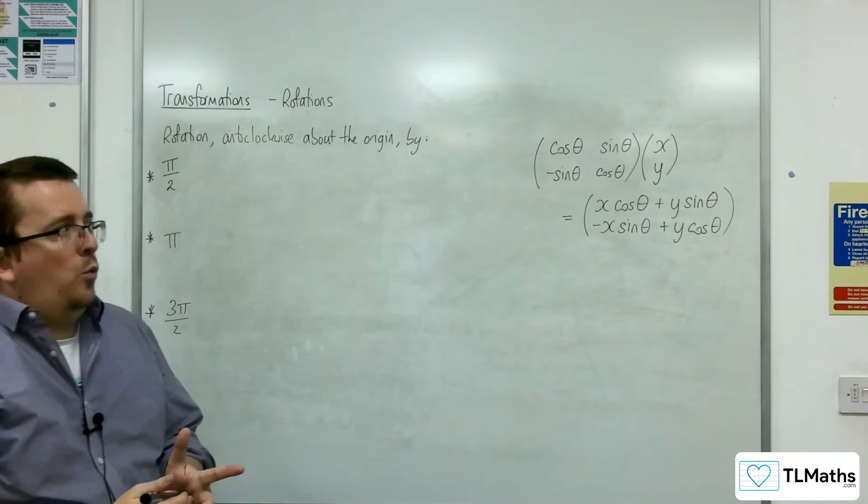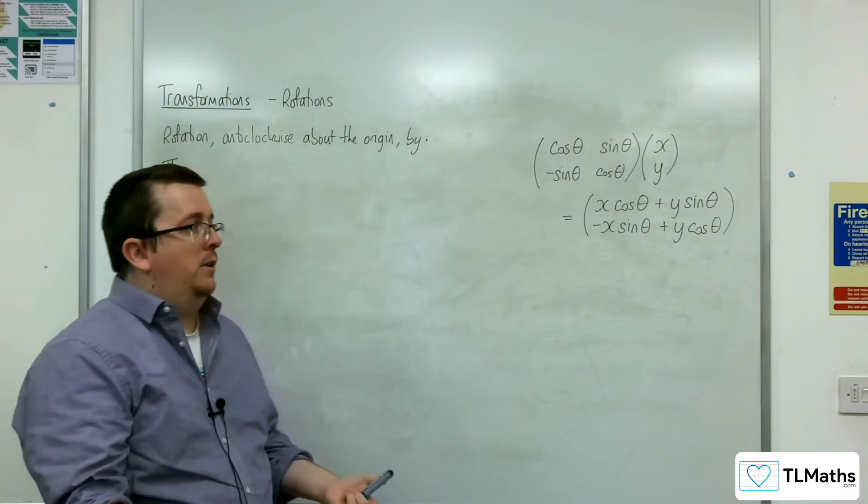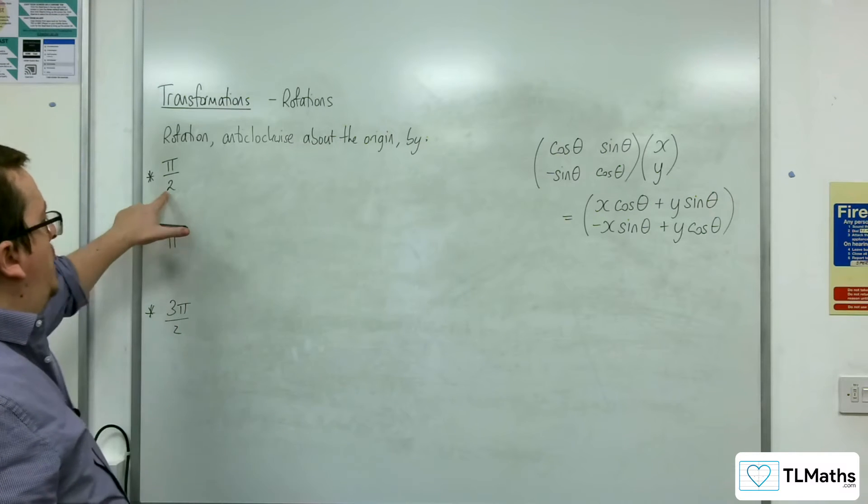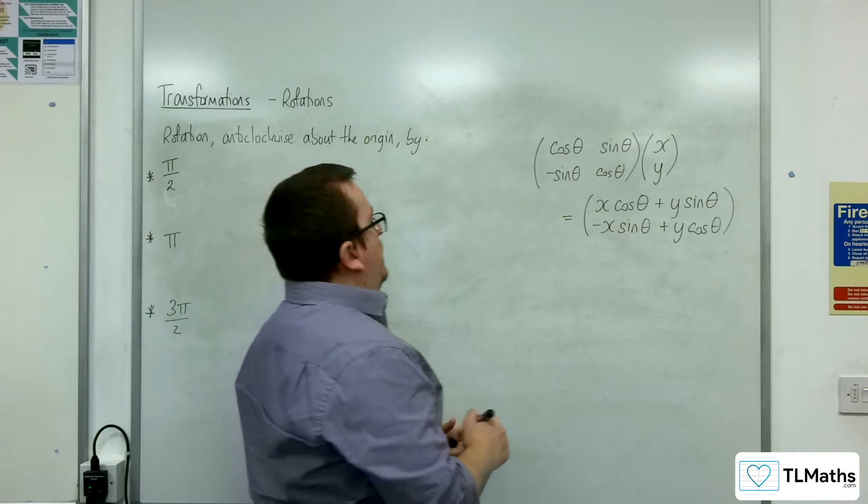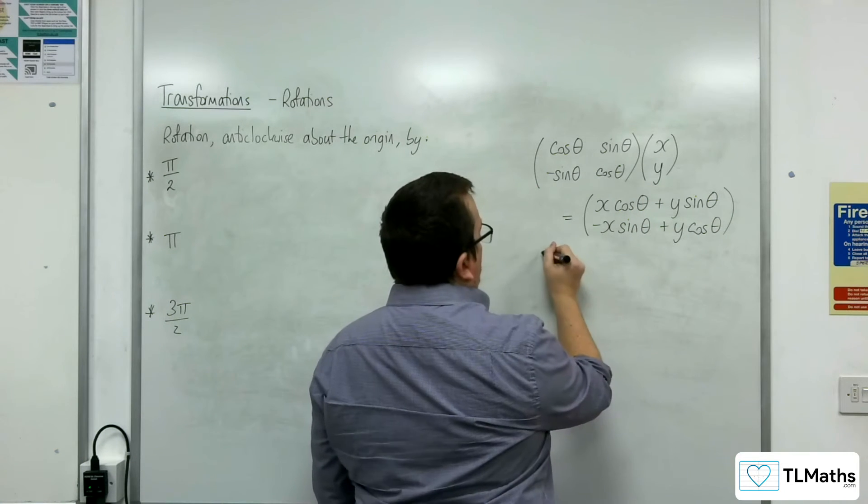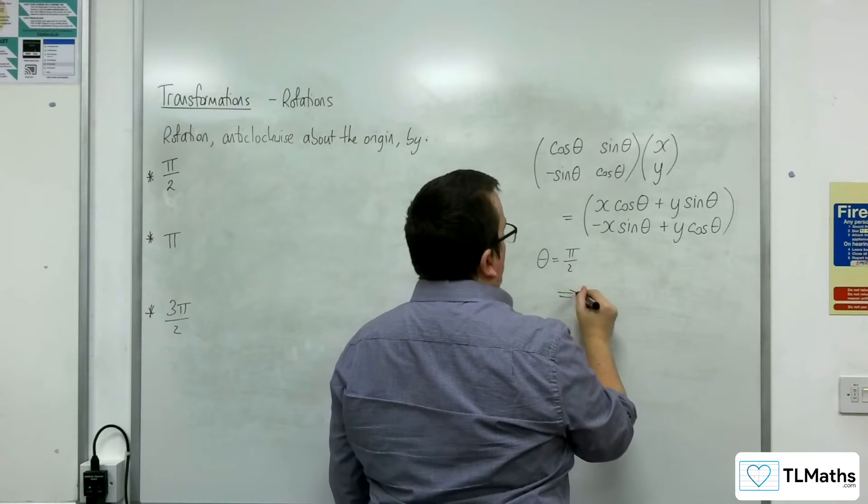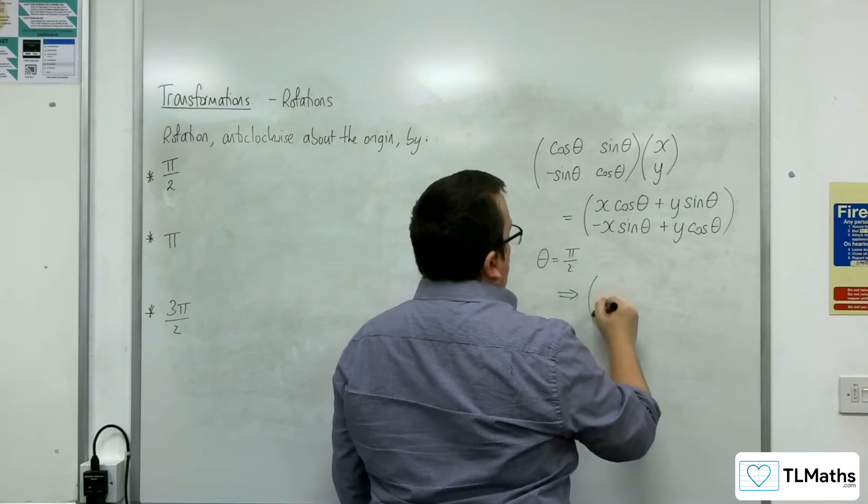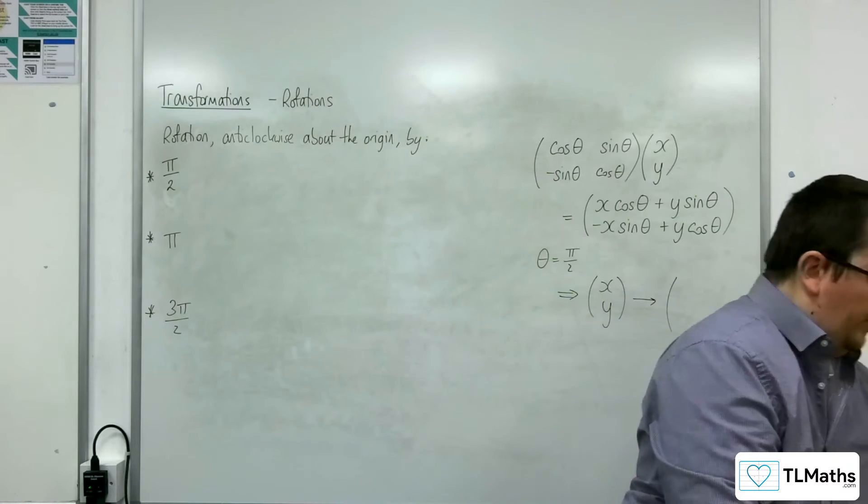So then if I wanted to, let's say, rotate anticlockwise about the origin by angle pi over 2, then I could replace the theta here with pi over 2. So when theta is equal to pi over 2, what do I get? Well, the coordinates x, y would go to,